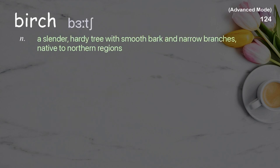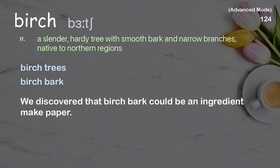Birch: a slender, hardy tree with smooth bark and narrow branches, native to northern regions. Examples: birch trees, birch bark. We discovered that birch bark could be an ingredient to make paper.